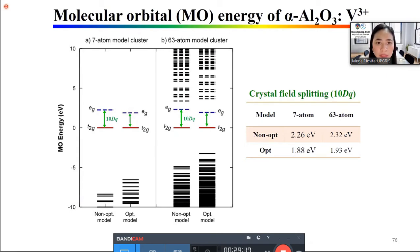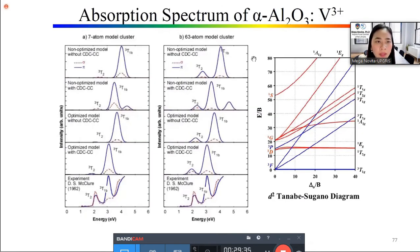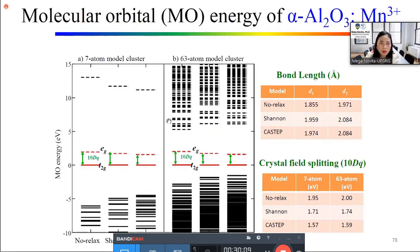Here is the molecular orbital MO energy of alpha-alumina doped with vanadium 3+ for 7 atom model cluster in the left panel and 63 model cluster in the right panel. We see here when we consider lattice relaxation effect 10Dq decrease. Here are the tables of their energy values. And we also perform the absorption spectrum here. The first peak belongs to the triplet T2 states, and the second peak belongs to the triplet T1 states. Since vanadium 3+ belongs to d2 configuration, so it is simply the transition from the ground state to their each state.